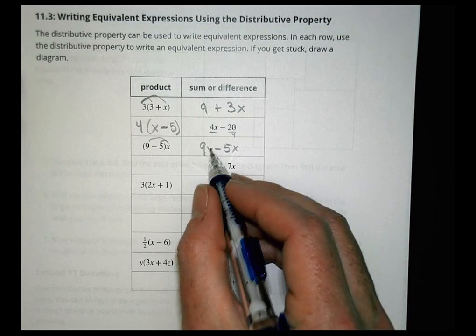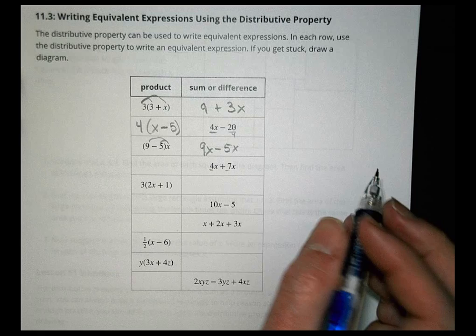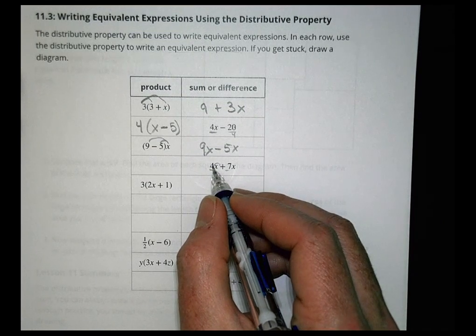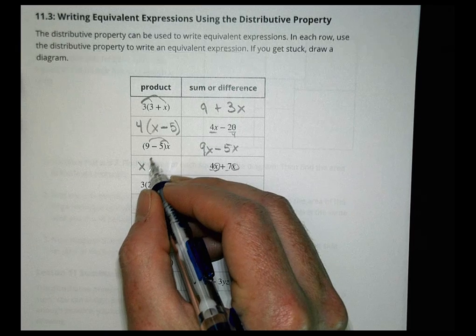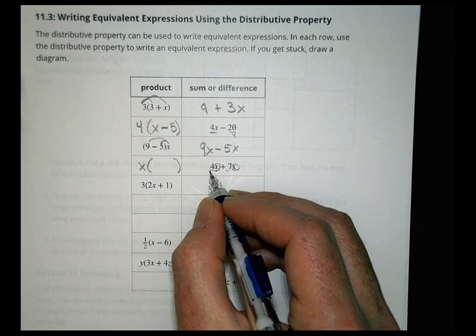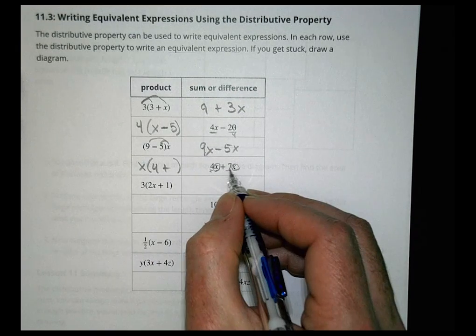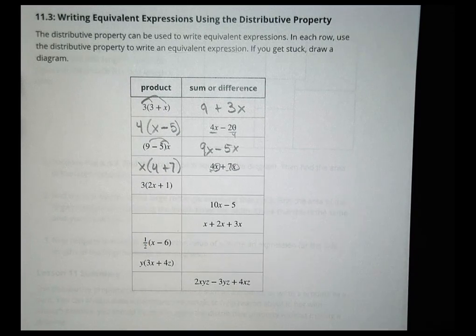Let's distribute this one. We have x times 9 is 9x minus 5x. This is a great one. You might be thinking, I don't see anything in common with 4 and 7. What do they have in common? They both have an x in front. Let's take an x out of each term. If I take an x out of 4x, what's left? 4. If I take an x out of 7x, what's left? 7. So x(4 + 7).